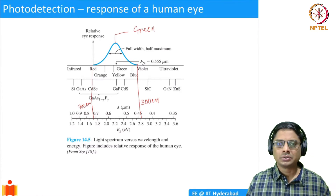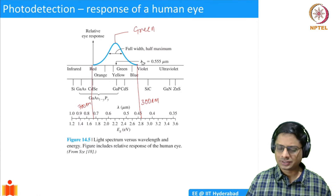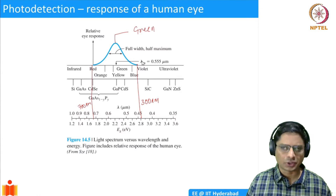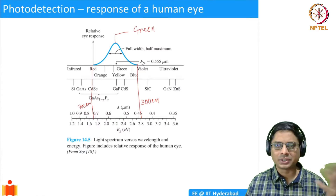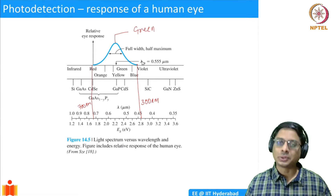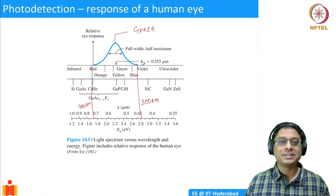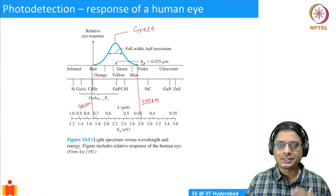Consider a regular laser pointer used in presentations — this small battery-operated device emits about a few milliwatts. In that spot, there are above 10^15 photons, and we can see it quite clearly. Now, if you start reducing the number of photons by 15 orders of magnitude, we can still see with the human eye. It's a very fantastic photodetector in that sense.